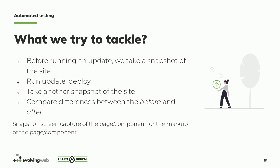Today we'd like to discuss a very specific scenario: you run a core update, take a snapshot of the site, deploy the code, take another snapshot, and compare to see if there is any difference. If the difference is acceptable, you let it pass; if not, you go check what happened. The term 'snapshot' refers to either a screenshot of the page or the markup of the page, depending on the tools you're using.